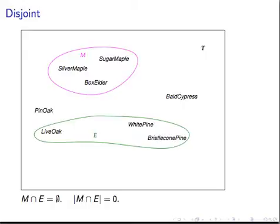The set of maples and the set of evergreens are disjoint. Again, we're just talking about the species listed here. There, in fact, does exist at least one maple species that is evergreen, but we're not talking about that species in this discussion.